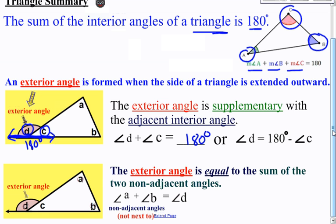Angle D equals 180 minus C. So if they give you C as 60 degrees, all you would have to do is 180 minus 60 and you would get 120 degrees for angle D.